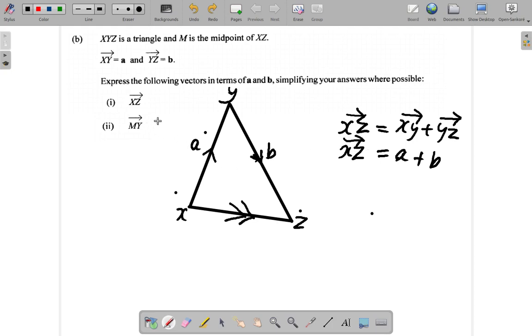Now it says M is the midpoint of XZ. M is here. And MY, from M to Y.